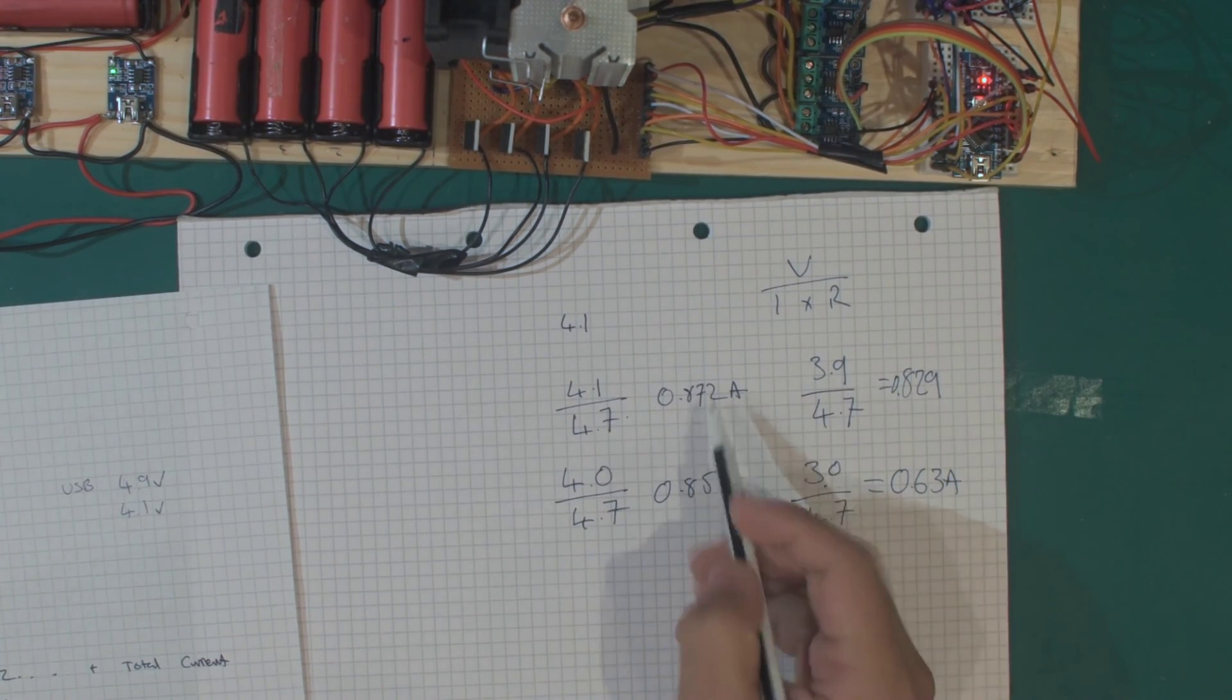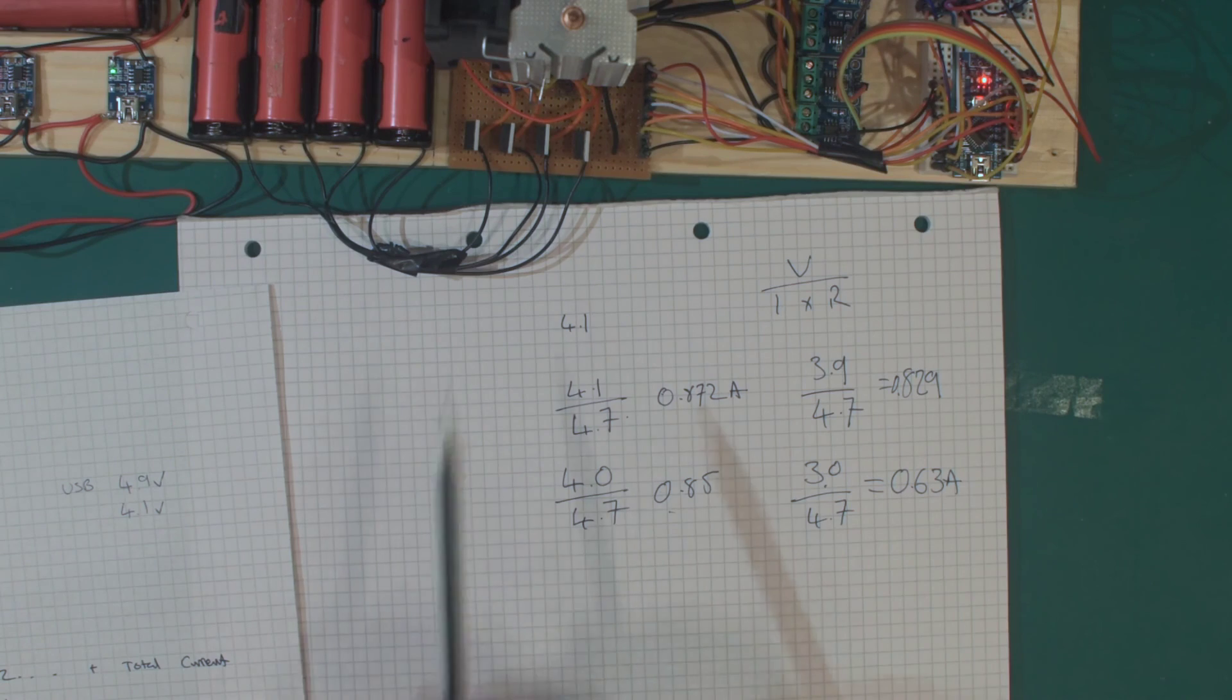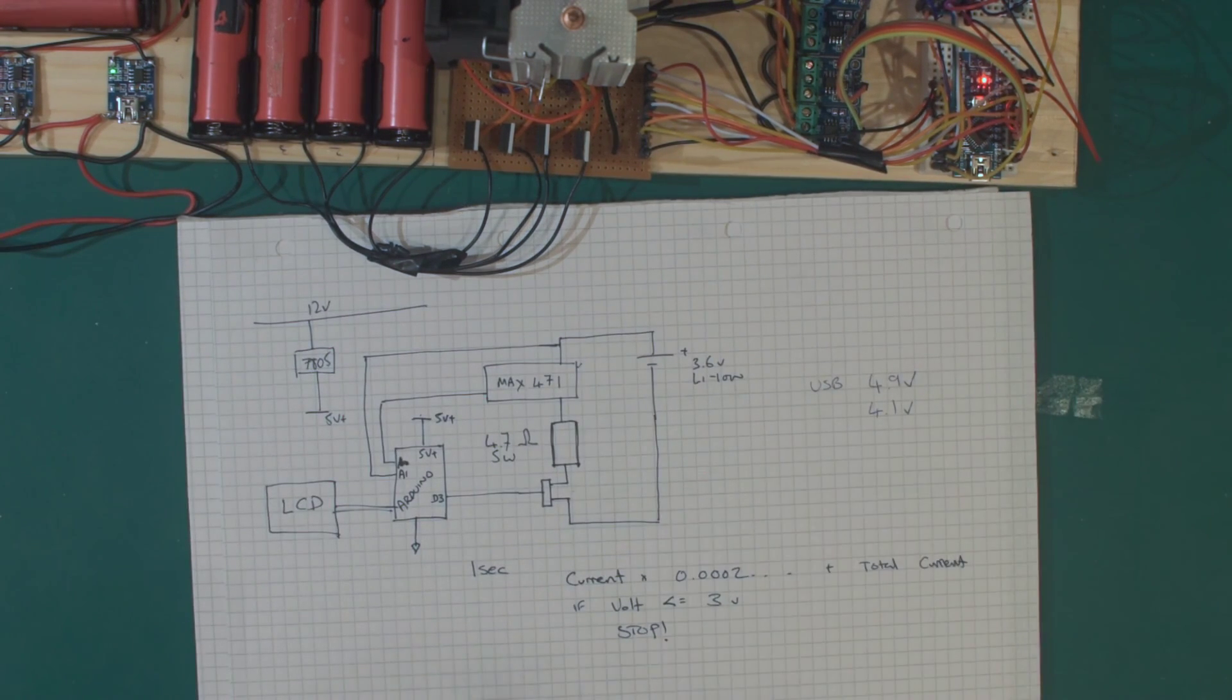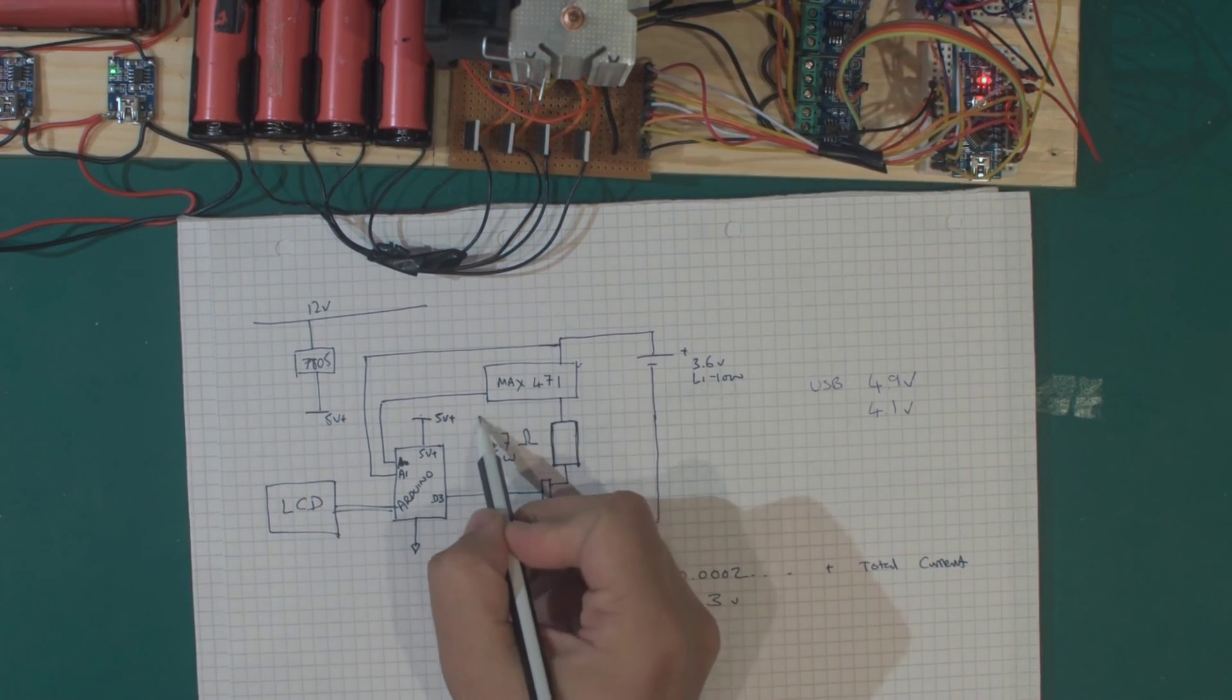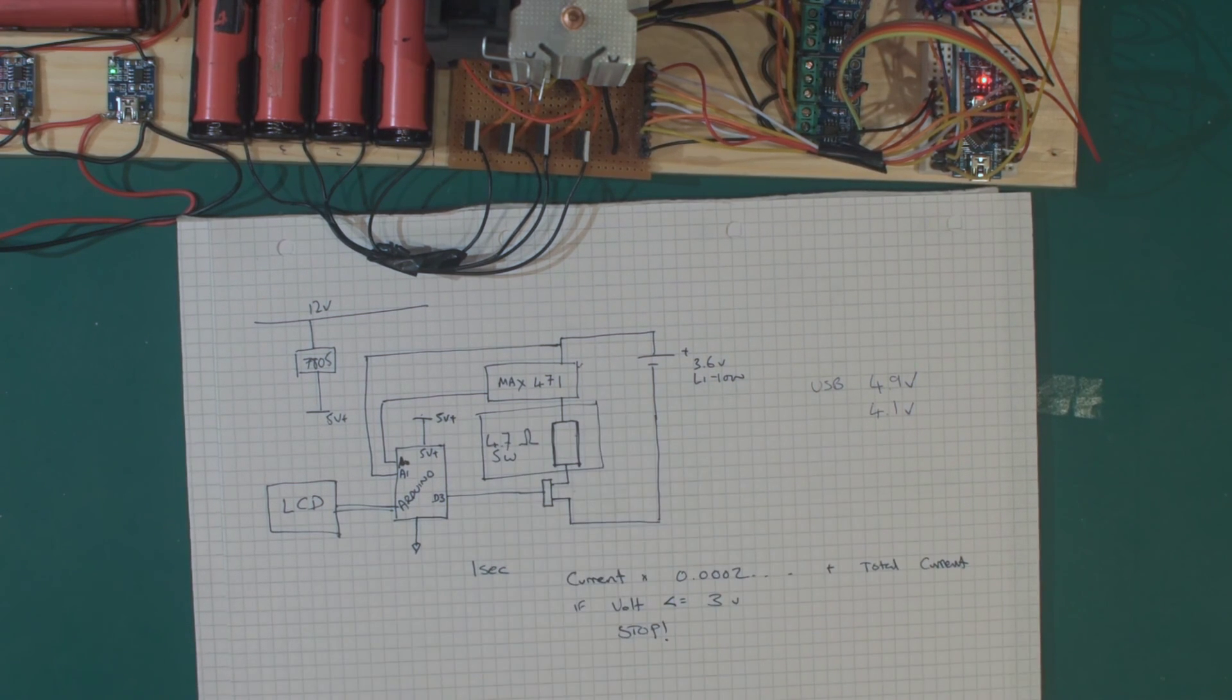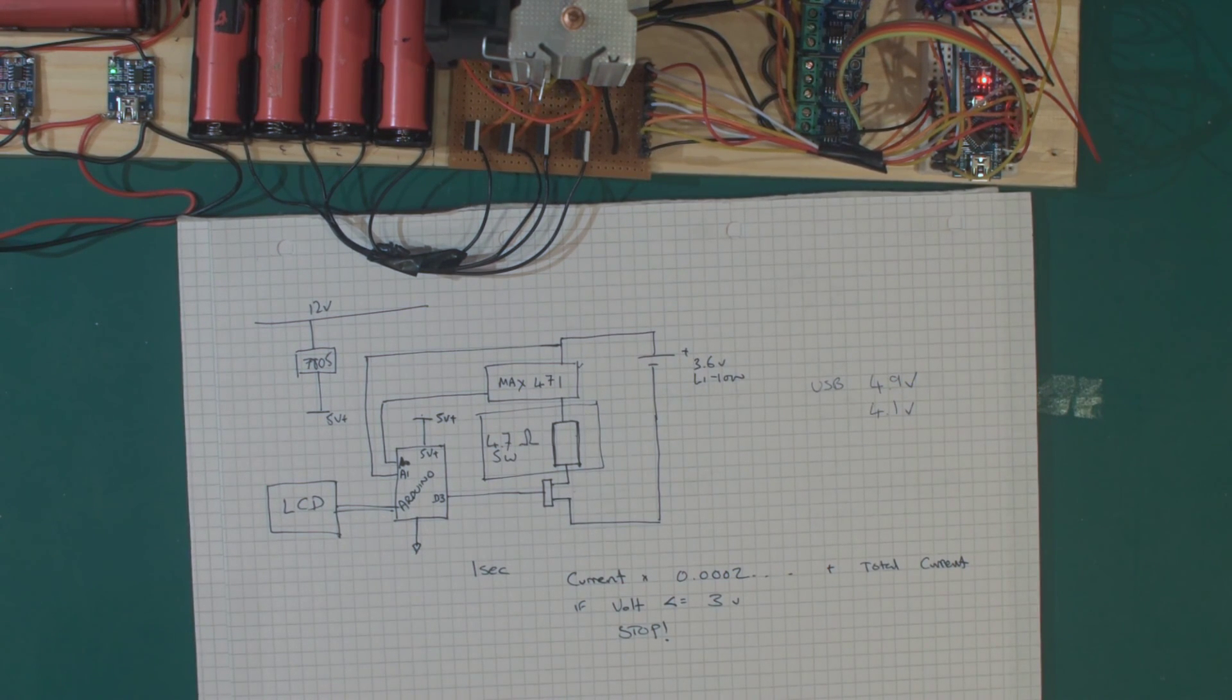So we're never really discharging this thing at constant current. To fix this, we'll replace this portion of our design with a constant current load to discharge this battery more accurately over time.